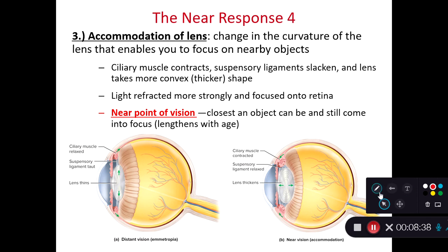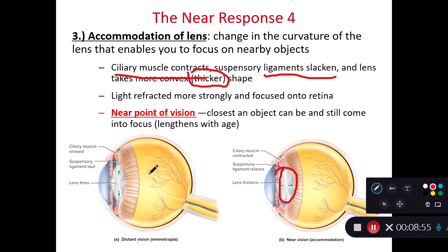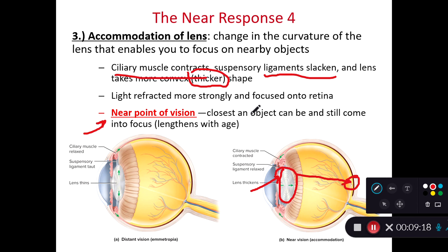Finally, we need to accommodate the lens by changing its curvature. The ciliary muscles contract, the suspensory ligaments slacken, and the lens takes on a convex or thicker shape. That thicker lens causes more refraction, bending photons of light traveling at oblique angles so they are more likely to be refocused onto the macula lutea and fovea centralis.